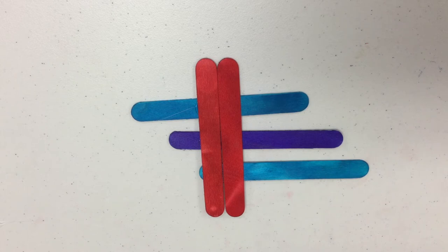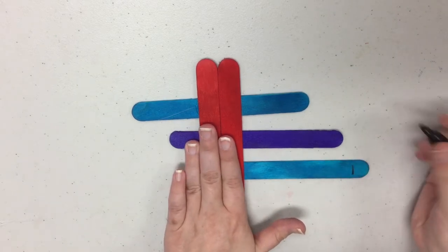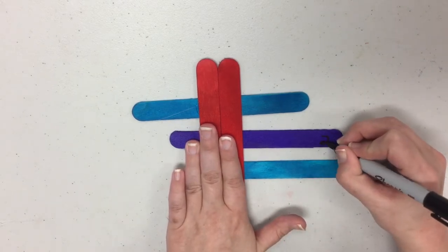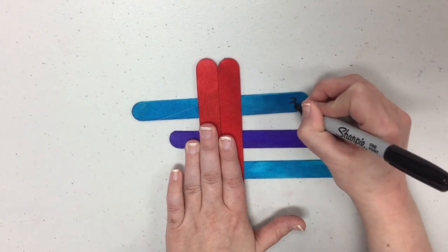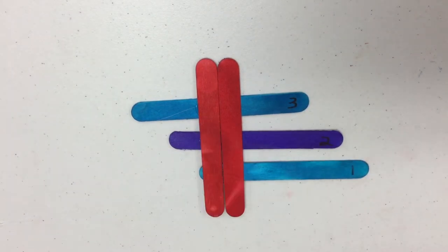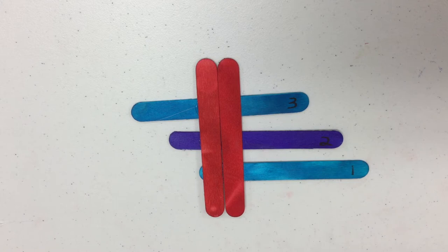Now we want to number our craft sticks starting with the one that is sticking out as number one so this one's going to be number one this one's number two and this one is number three and this is going to serve as our starting piece for a craft stick chain.